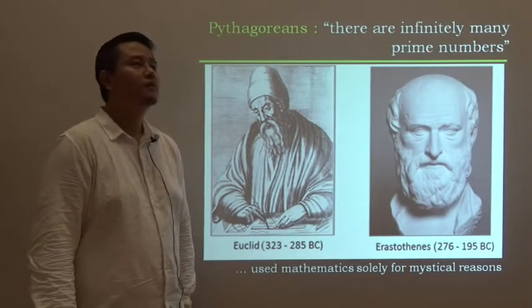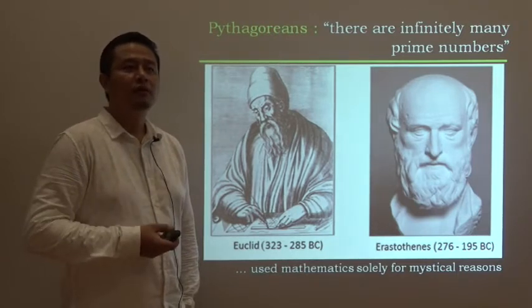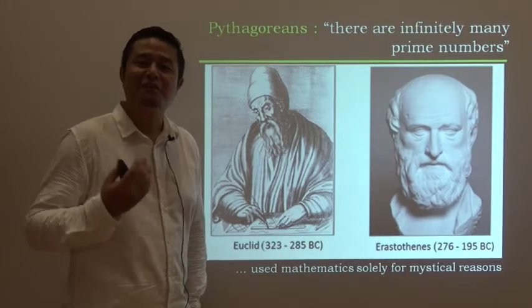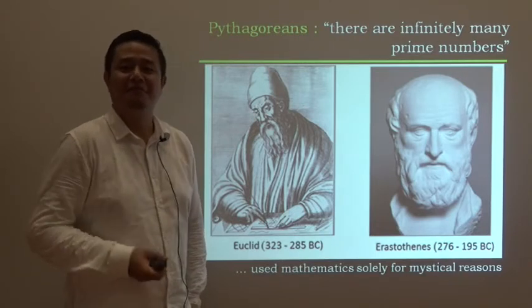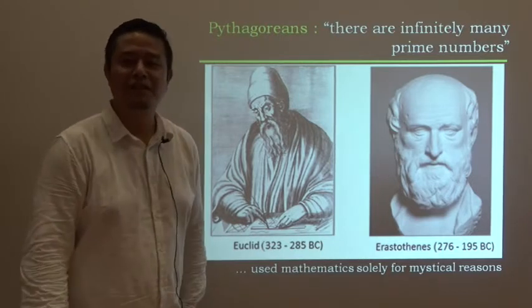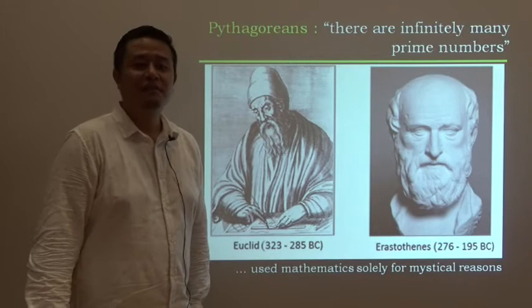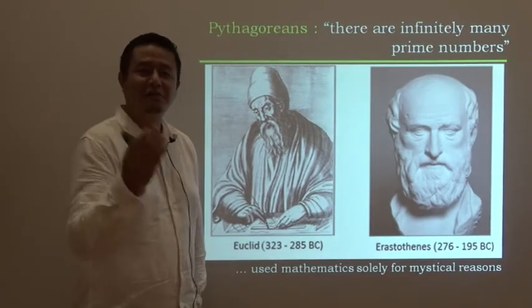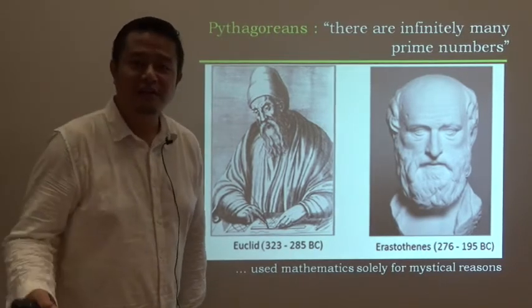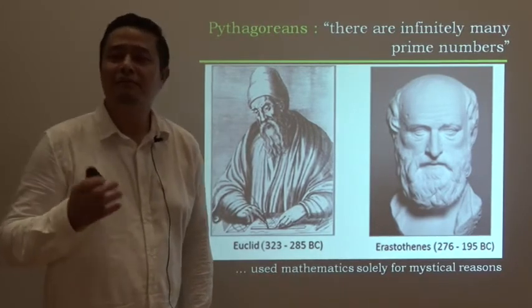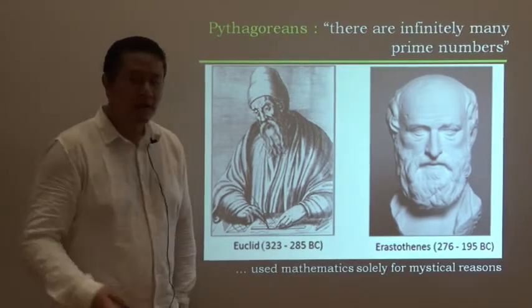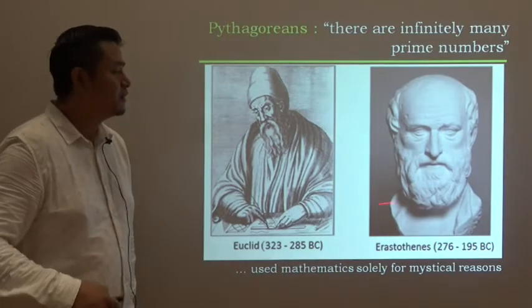Till modern times, we associate numbers with superstitious beliefs. Number 7 is always considered a good number, lucky number. Number 13, another prime number, is considered not very good. In many hotels, room number 13 is skipped - it goes from room 11 to 12 and then 14. Friday the 13th. We associate prime numbers with many superstitious beliefs. These beliefs started from the 3rd century BC.